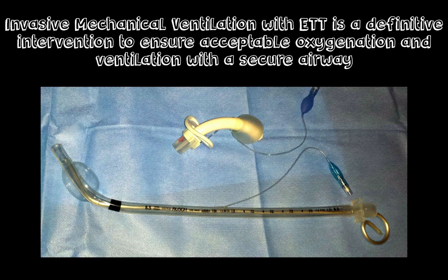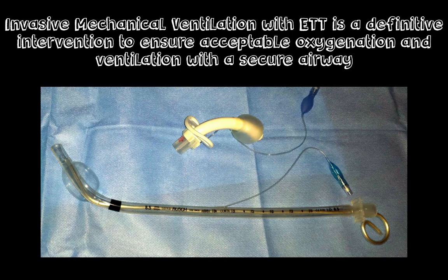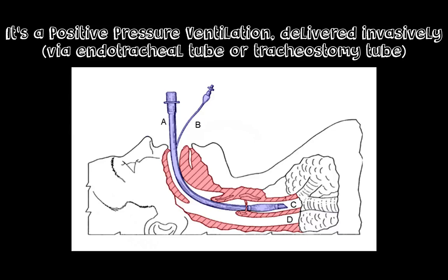Here, we'll mainly focus on invasive mechanical ventilation. Invasive mechanical ventilation is conducted via endotracheal tube or a tracheostomy tube. It's a definitive intervention to ensure acceptable oxygenation and ventilation with a secure airway in place. In this picture, you see both adjuncts — these are invasive adjuncts that provide a secure airway. Unlike our normal breathing, which is negative pressure breathing, whenever a person is placed on mechanical ventilation or you're performing bag-valve mask ventilation, it's positive pressure ventilation.